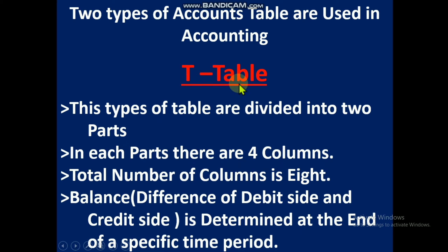Balance. The difference of debit side and credit side is determined at the end of a specific time period. What is balance? The difference of debit side and credit side of an account. For example, if debit side is 10,000 and credit side is 8,000, then the debit balance is 2,000 — meaning the debit side is greater than the credit side by Taka 2,000.